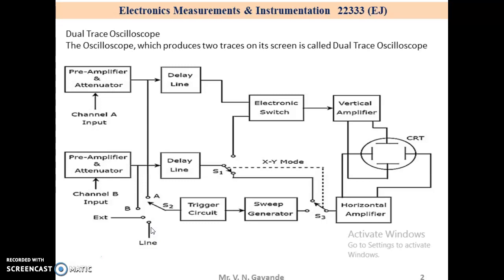This oscilloscope uses the same electron beam. The CRT consists of a single electron beam. It uses that single electron beam for deflecting the input signals of channels A and B in the vertical direction by using an electronic switch, and produces two traces on the CRO screen. The blocks that deflect the beam horizontally are common for both input signals.